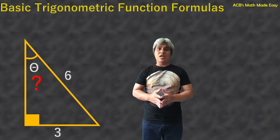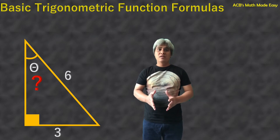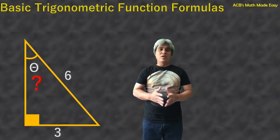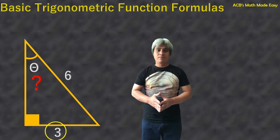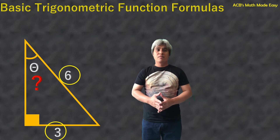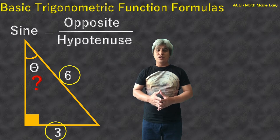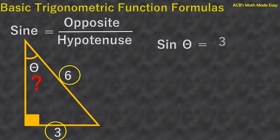Just click the video on top to watch it. But if you already have watched it, we can now continue. Once again, the opposite of the angle theta is 3 units, and the hypotenuse is 6 units. If you already have watched the video, you will see that sine is equal to opposite over hypotenuse. So sine theta equals 3 over 6.